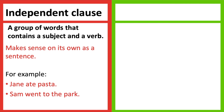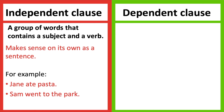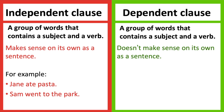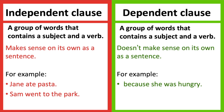A dependent clause is also a group of words that contains a subject and a verb. However, a dependent clause doesn't make sense on its own as a sentence. For example, Because she was hungry. As we can see from this example, there's a subject and a verb. However, the clause doesn't make sense on its own as it doesn't convey a complete thought.